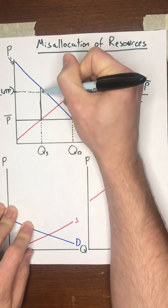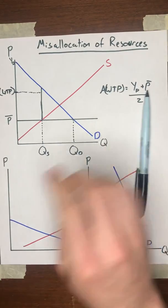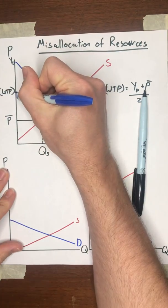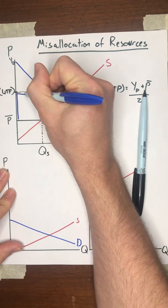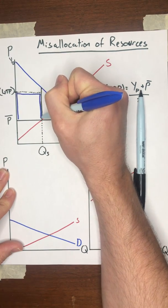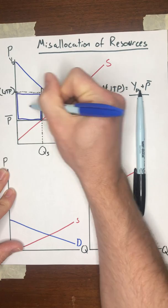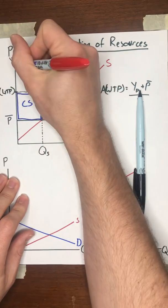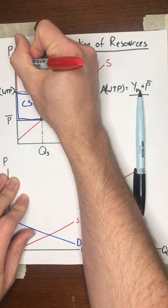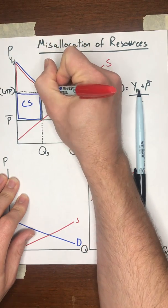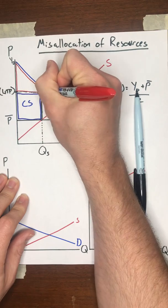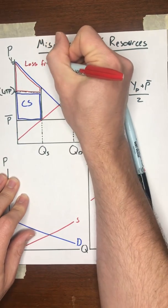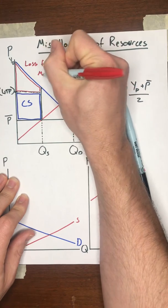You're handing out QS of these things. And so this will be the consumer surplus. And this area right here, that represents the loss from misallocation.